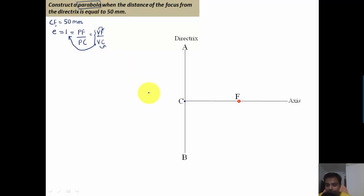What needs to be done is pretty simple: exactly in between C and F we're going to make one more point in the form of V. Now 10 millimeters away from this vertex towards the right, I'm going to make points 1, 2, 3, 4, 5, 6.